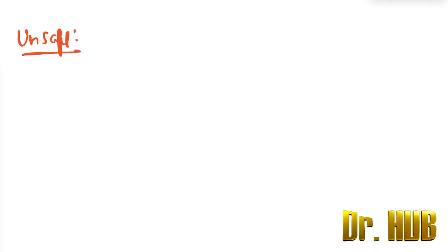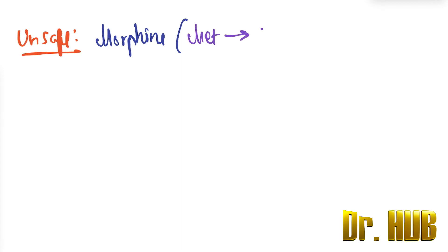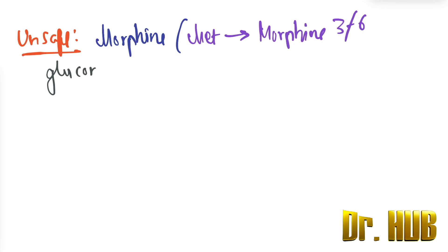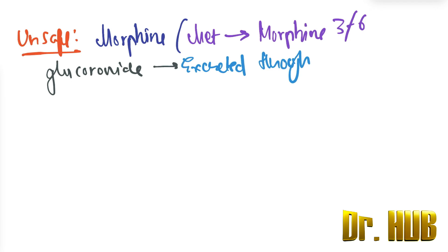Under unsafe opioids, morphine is included. Morphine is metabolized to morphine-6-glucuronide, and this metabolite is excreted through the kidney, making it unsafe in renal failure.